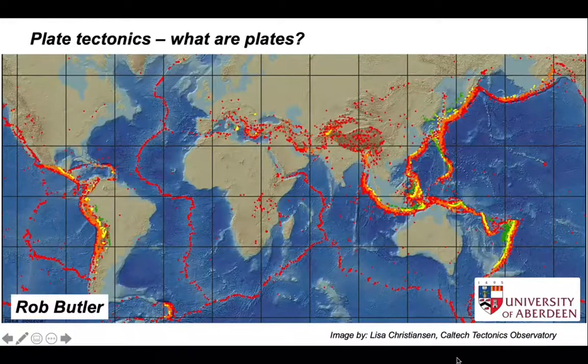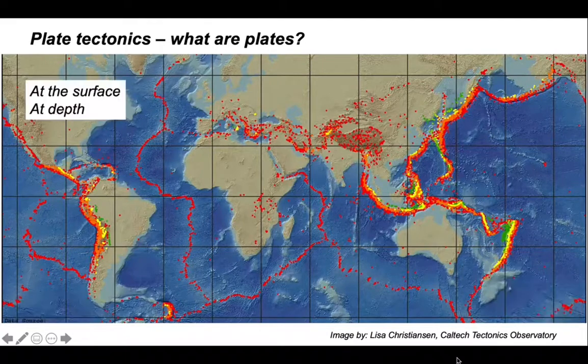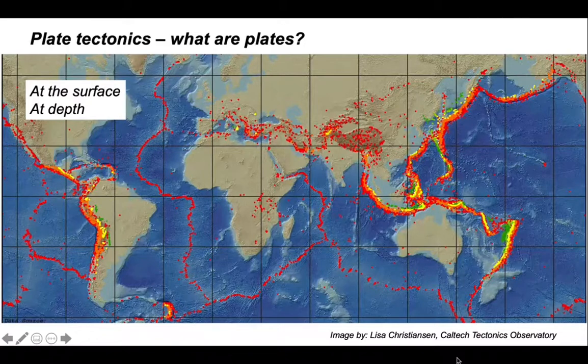The outer part of the Earth is made up of a jigsaw of tectonic plates. How are these defined? We'll answer this question starting at the Earth's surface and then look below the plates.